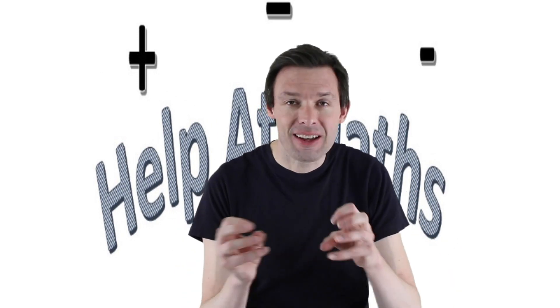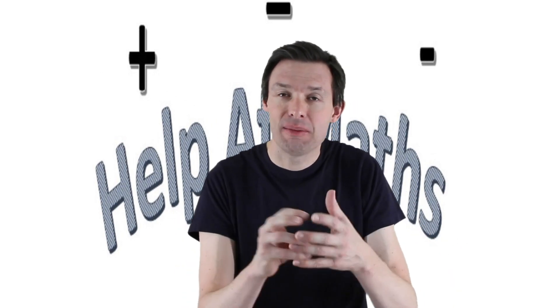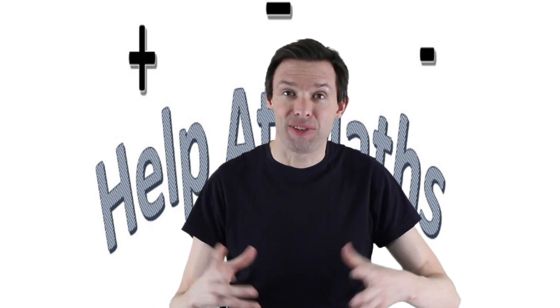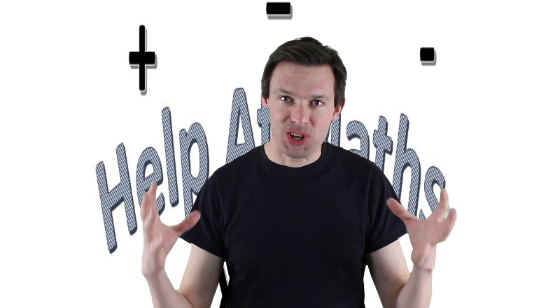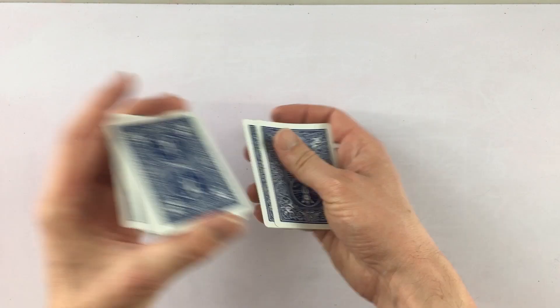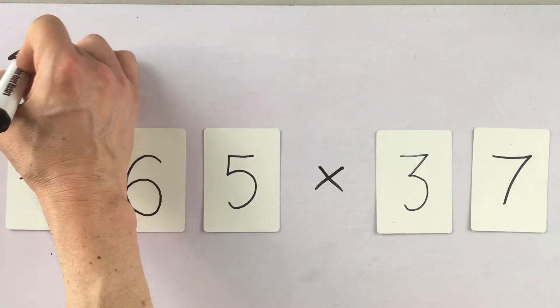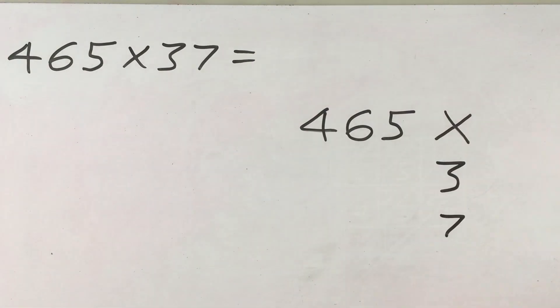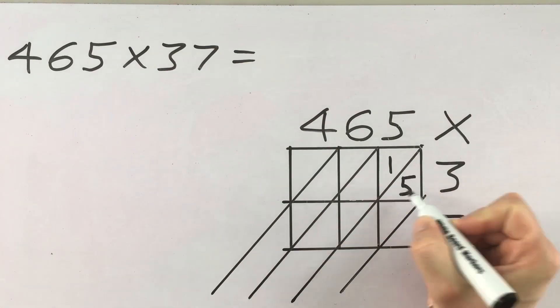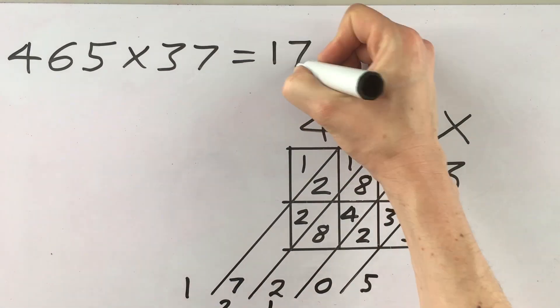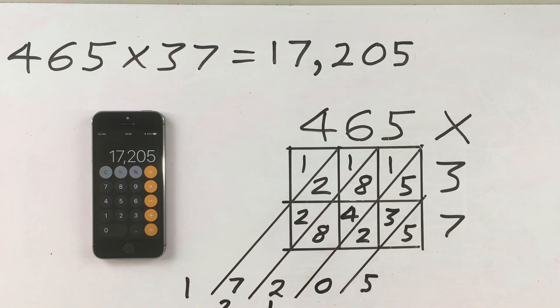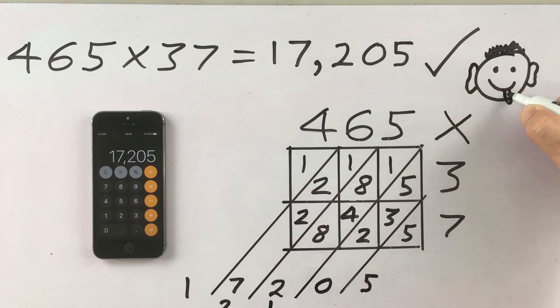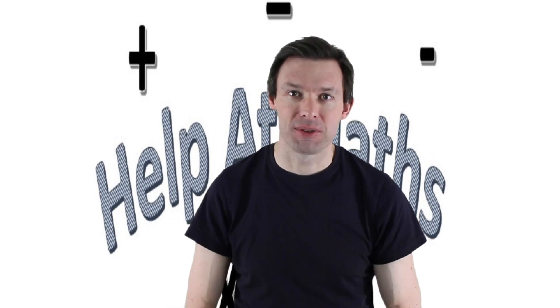If you want to, start easy. Start with simple numbers like two digit numbers times one digit if you want to. But challenge yourself. See how big you can go. What's the biggest calculation that you can do with this method? You can use digit cards or playing cards or dice maybe to generate some random numbers. Multiply them together. Do the grid. Do Napier's bones. And check your answer and see if you get it right. And then message me on my Facebook page and tell me what's the biggest calculation that you managed to solve without a calculator. It's also a fantastic method for practicing your times tables and we've talked about how important those are too.